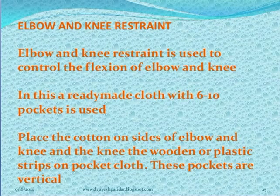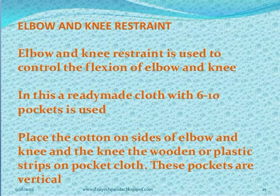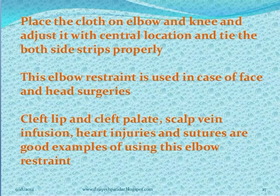Next is elbow and knee restraint. This is used to prevent flexion and extension of the elbows. It is a ready-made cloth with 6 to 10 pockets. Place cotton on one side of the elbow or knee and a wooden or plastic strip in the other pocket. Place the cloth on the elbow or knee at the central location and tie both sides of the strip properly.